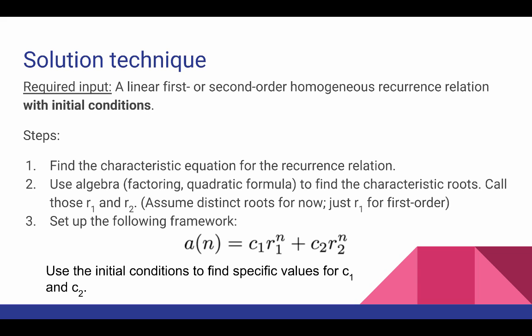The steps for finding a closed formula solution are as follows. We're first going to find the characteristic equation for the recurrence relation, like we saw in the last video. Then we're going to use algebra, which could be partly factoring and partly the quadratic formula, to find the characteristic roots for the recurrence relation. We're going to call those just for the time being r1 and r2.